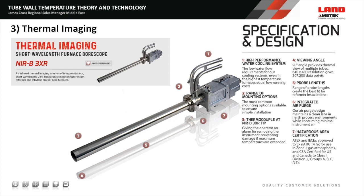The third method is thermal imaging technology. This is an example of our shortwave boroscope, the NIR-B3XR. With cooling water and purge air installed, it can be permanently installed in a reformer. The purge air ensures no hot gases are in permanent contact with the lens, and cooling water keeps all electronics below 45 to 50 degrees C. With a 90-degree viewing angle, placing the lens at the edge of the refractory allows you to see many tubes in a single aisle. Installing multiple cameras can give up to 90 to 95 percent coverage of all tubes in a reformer.